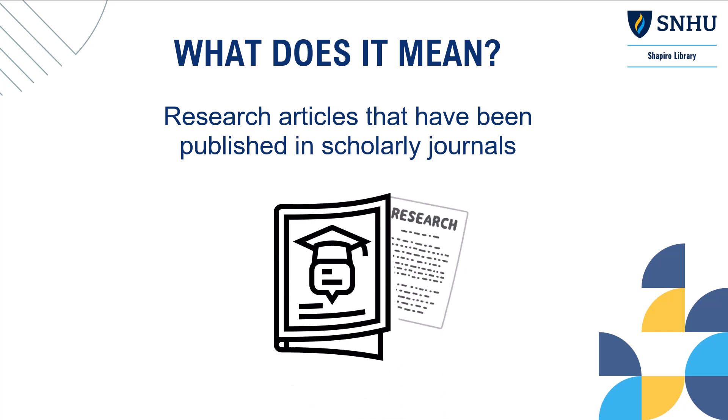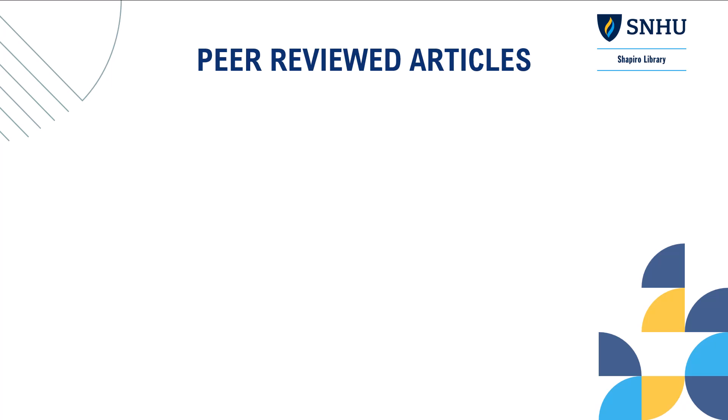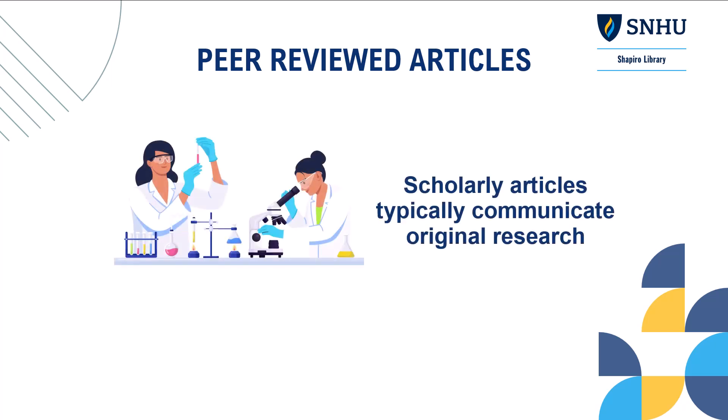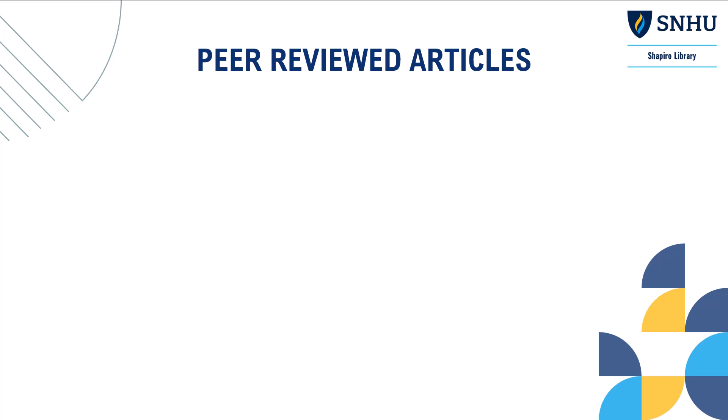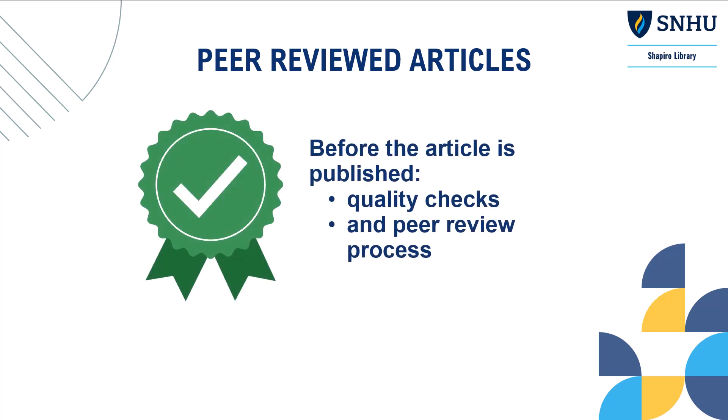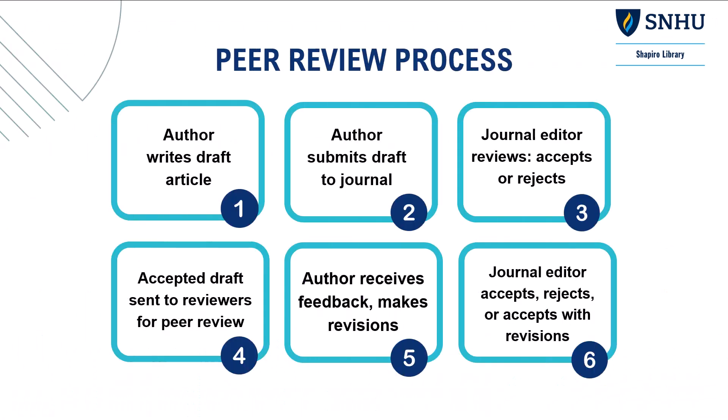So what exactly is a peer-reviewed article, and how does it get published in a scholarly journal? Unlike sources written for anyone interested in a topic, scholarly articles typically communicate original research or analysis for fellow researchers to read. Before the article can be published, it must go through several quality checks, and the most crucial one is the peer review process. This process adds an extra level of credibility and trust, which is why your instructors want you to use peer-reviewed articles in your research.